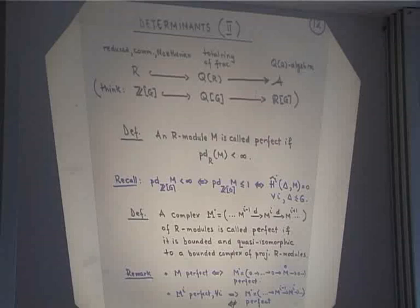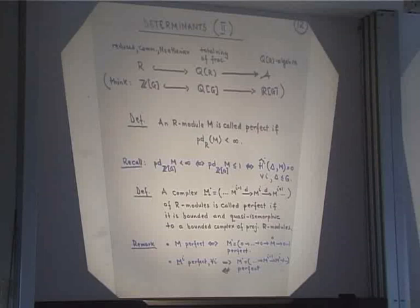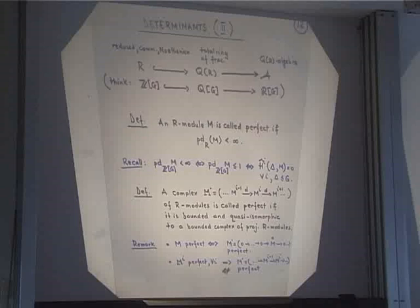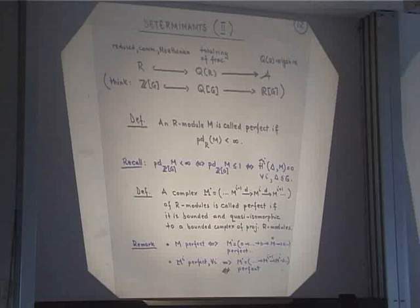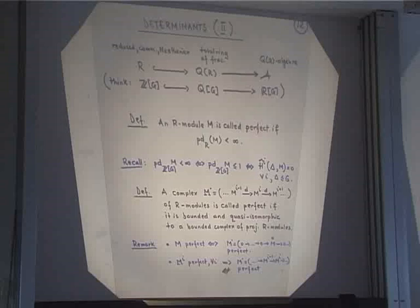I have a ring R which is reduced, commutative, and Noetherian, and I'll denote by Q(R) the total ring of fractions. Since R is reduced, Q(R) is a sum of fields. Let A be a Q(R)-algebra — what you have in mind is Z[G] as R, Q[G] as its total ring of fractions, and R[G] as the Q(R)-algebra. An R-module M is called perfect if its projective dimension over R is less than infinity. Over the ring Z[G], a module is perfect if and only if it is cohomologically trivial — meaning all Tate cohomology groups H^i_hat(Δ, M) are zero for every subgroup Δ of G.